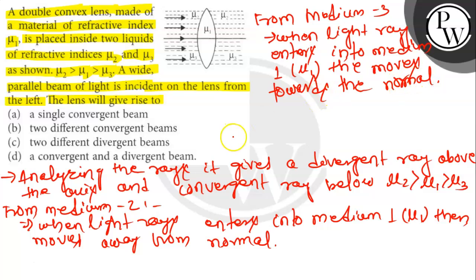Hence, option D is the correct answer. The lens will give rise to a convergent and divergent beam.